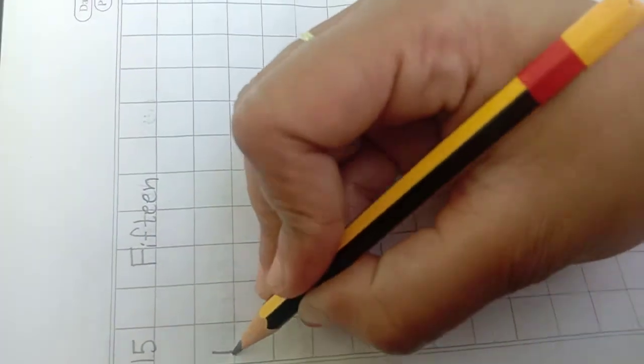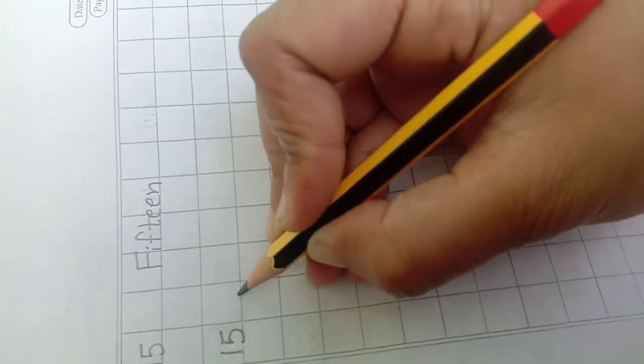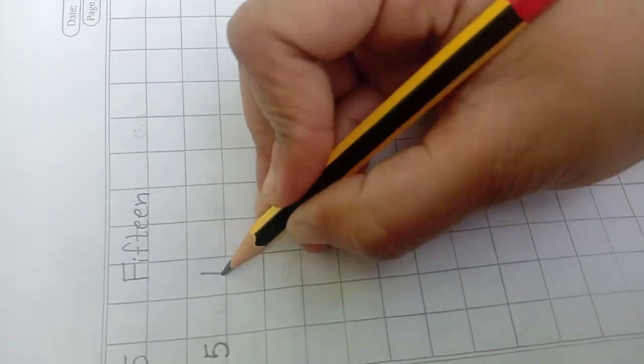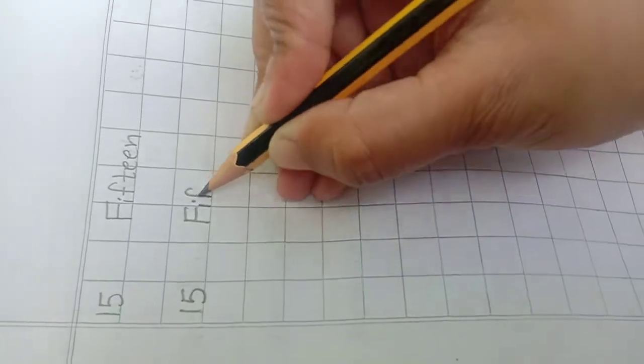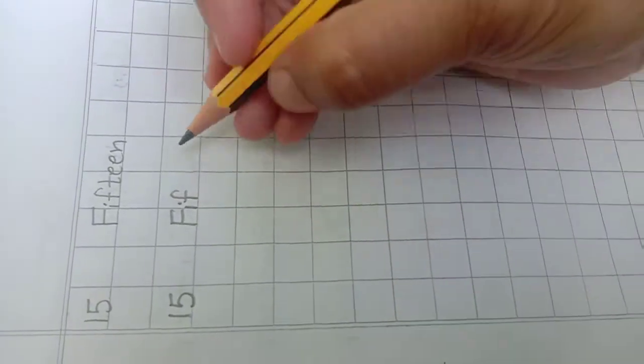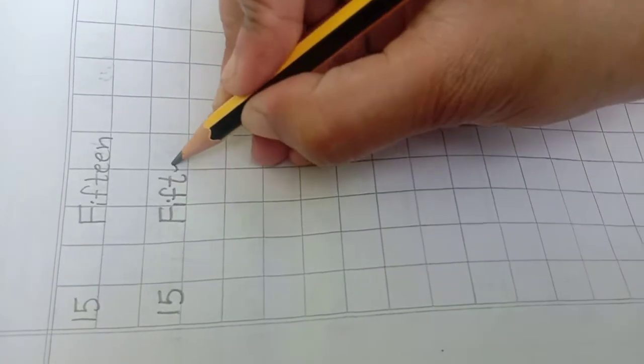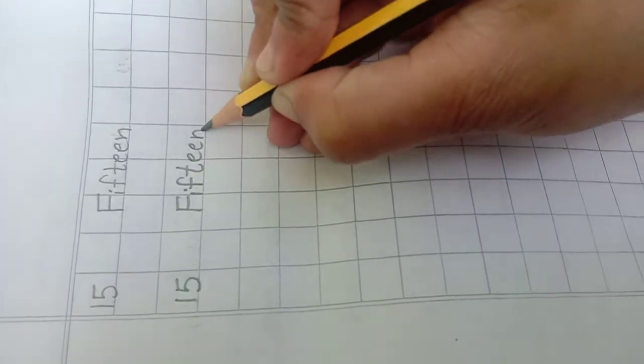Write 1, 5, 15. Leave one box, spelling of 15: F-I-F-T-E-E-N. 15.